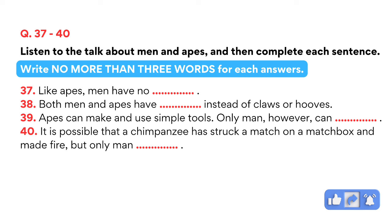But compared to the chimpanzee, for example, man's brain is four times as large. Like man, apes can use tools. For example, an ape may pick up a stick and put it in an ant's nest to make the ants come out. Similarly, apes have been known to make tools — for example, by breaking off branches to use as sticks. Man, however, is quite different — in fact unique among animals — because he can make a plan and then make a tool by following that plan.